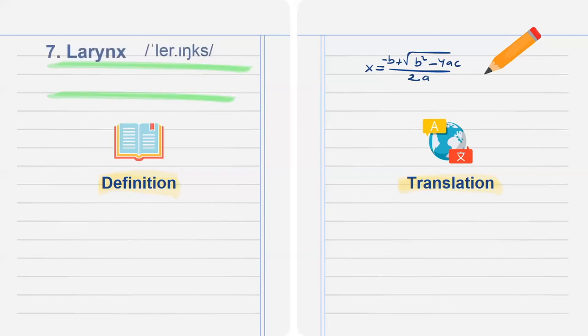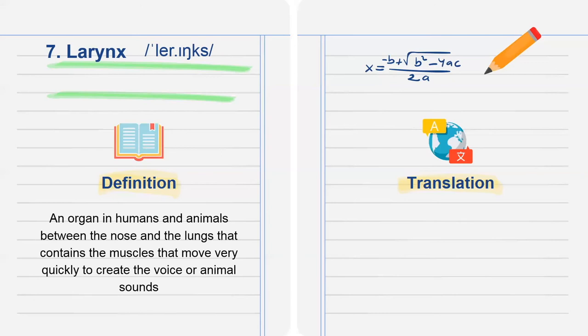The next word is larynx. An organ in humans and animals between the nose and the lungs that contains the muscles that move very quickly to create the voice or animal sounds. Translation: thanh quản.